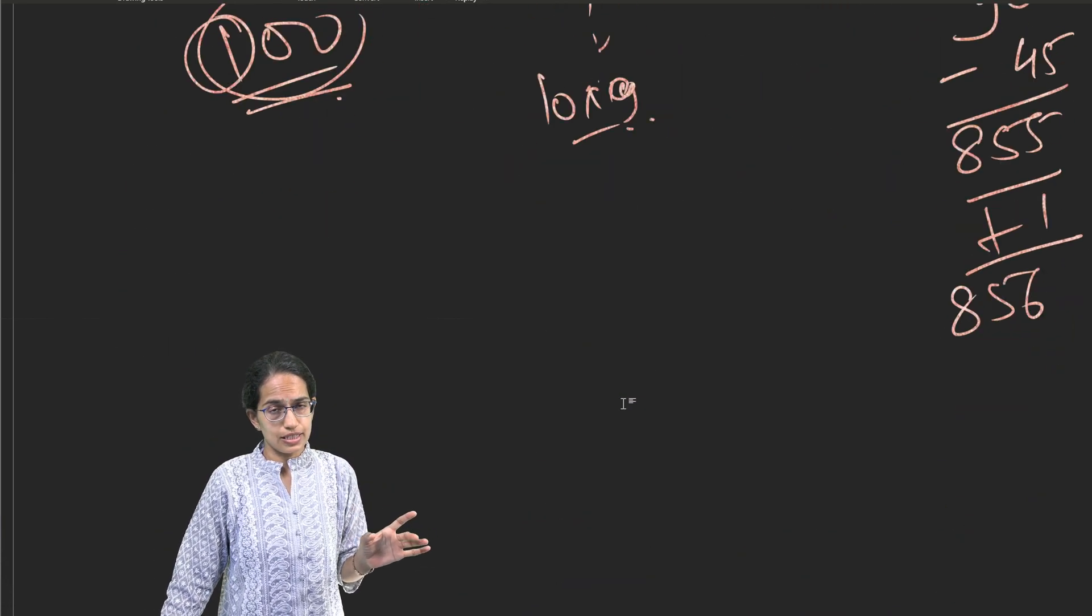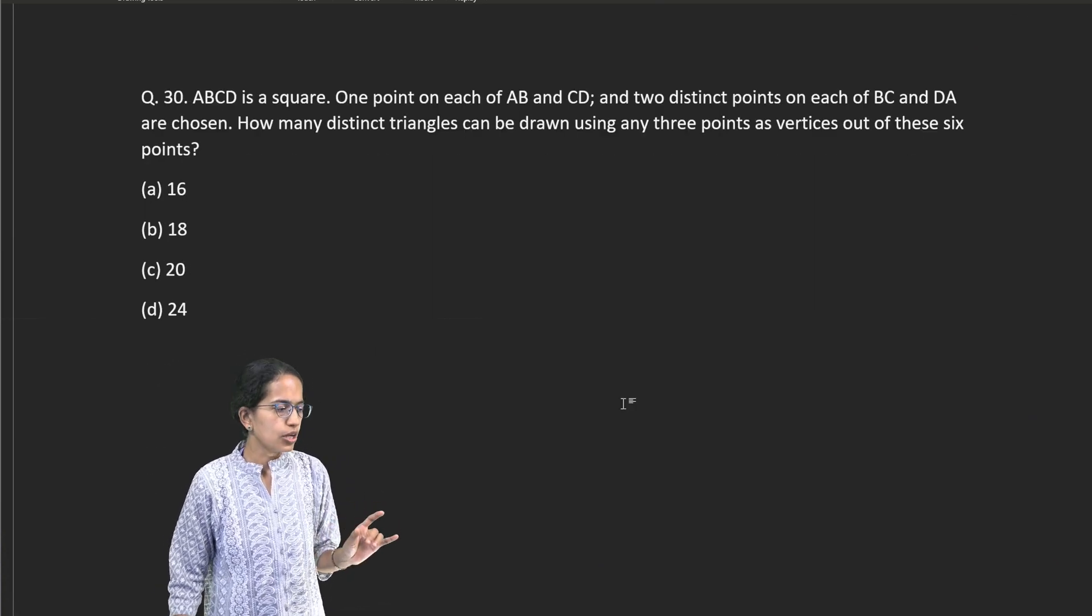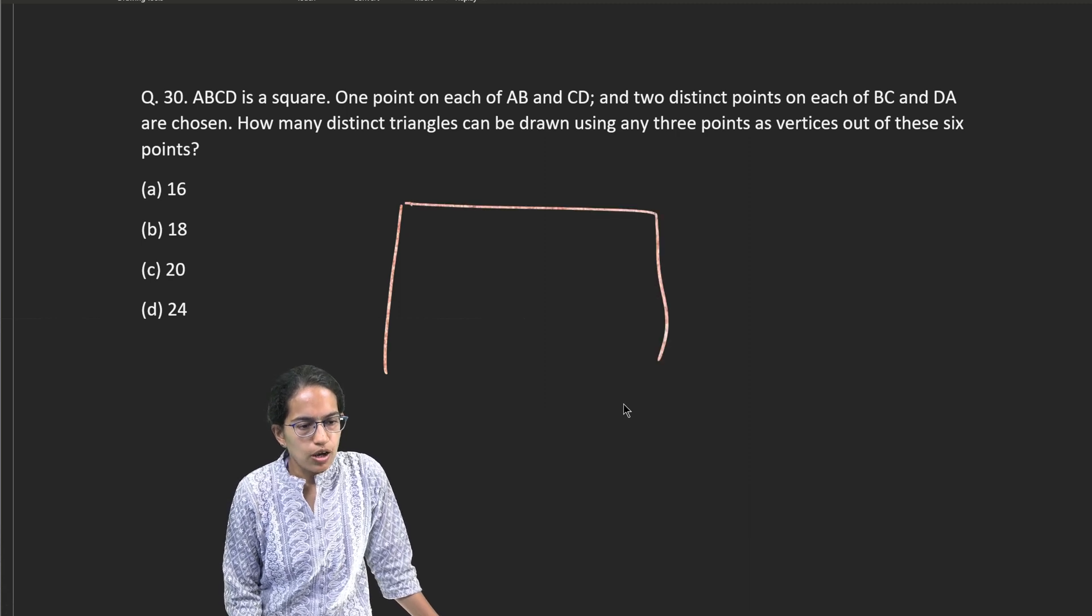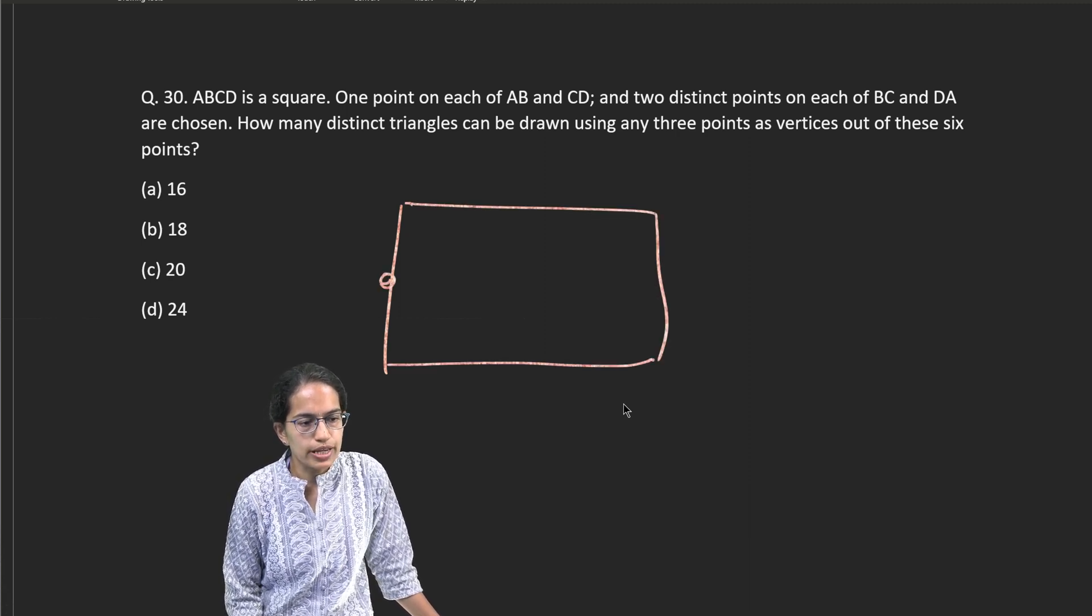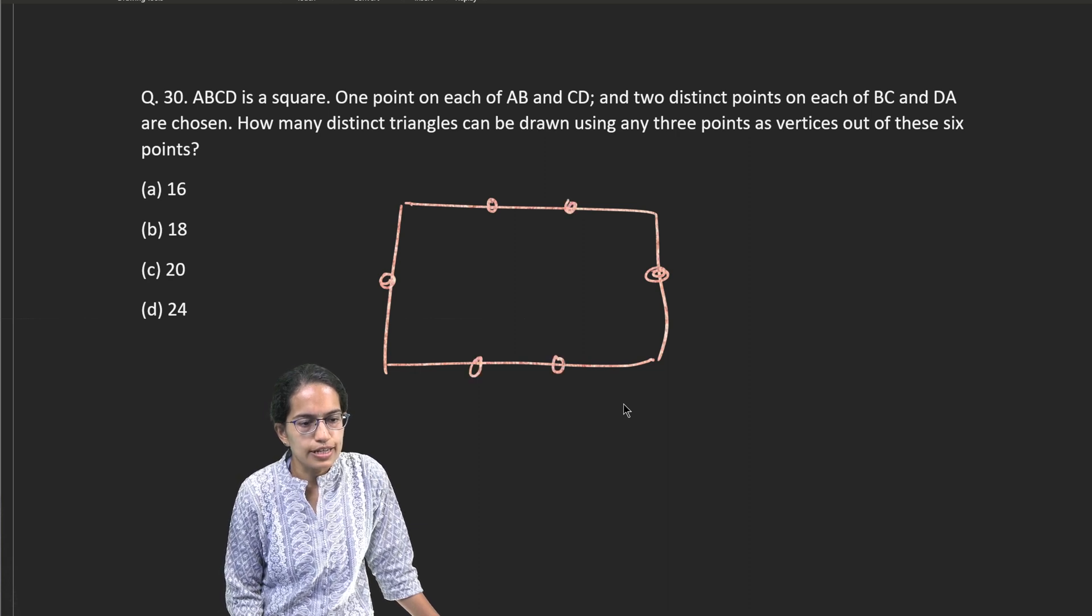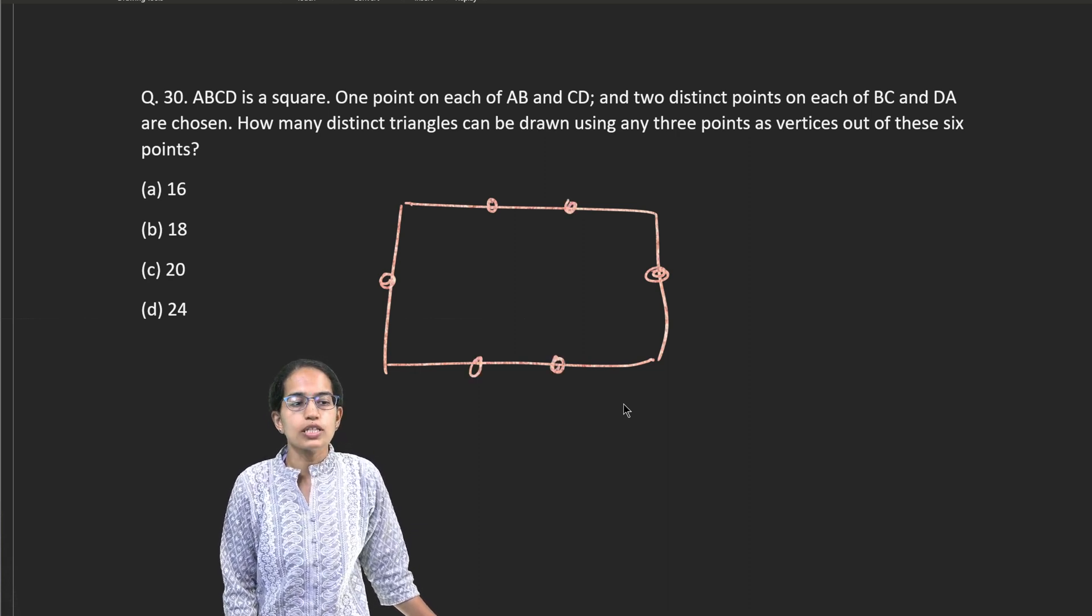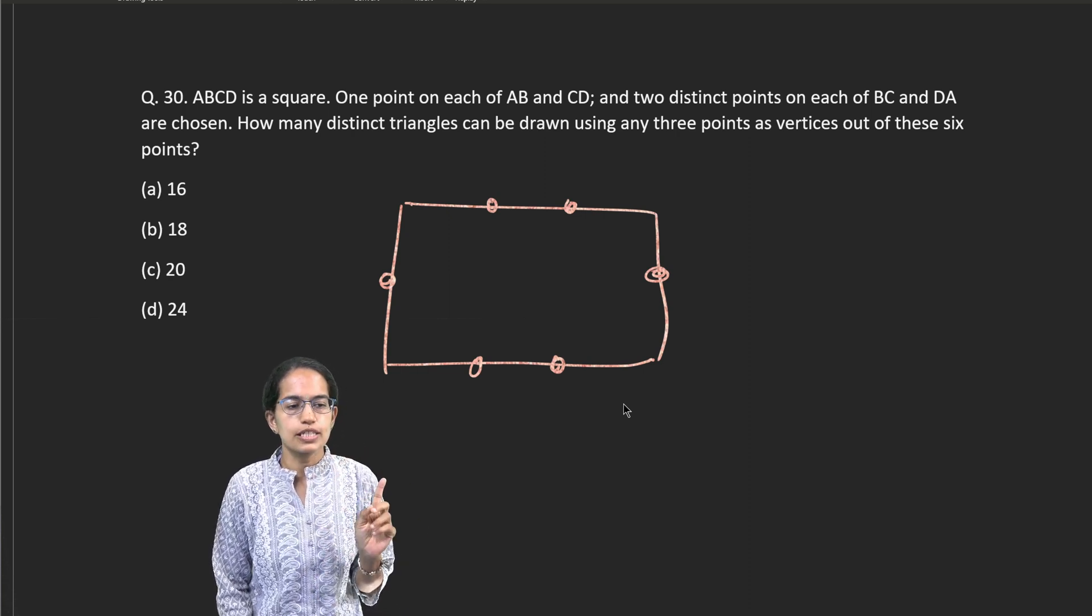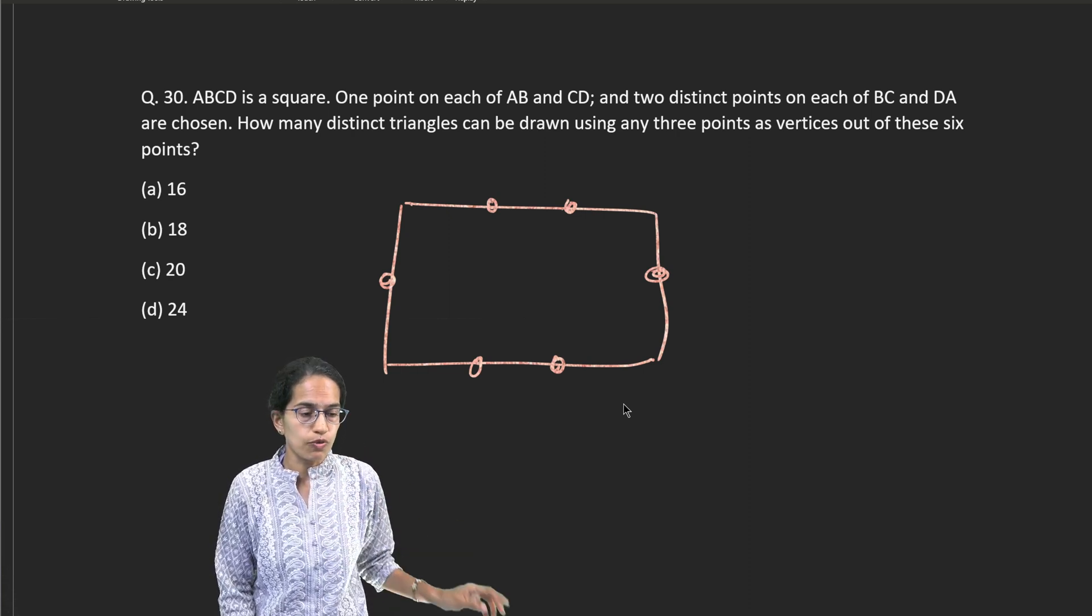A really interesting question because the question asks for sum of digits. Now, again, this is an interesting problem. Here, you have a square ABCD. Now, on this square, there are different vertices. So these are the vertices. On one side, there are one each and on the other side, there are two each. Important to note, don't get confused that these two points are collinear. So they cannot form a triangle. They can.